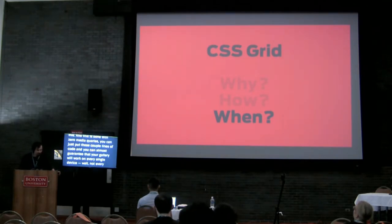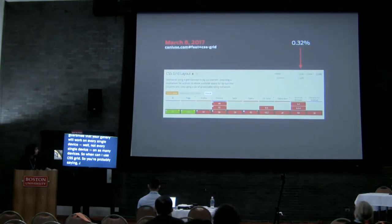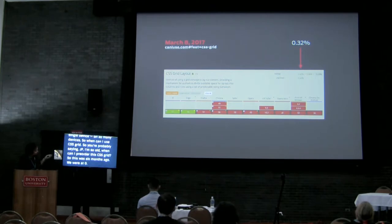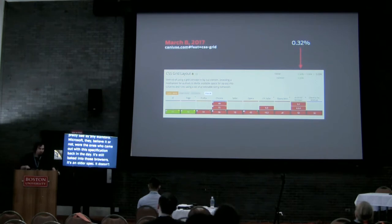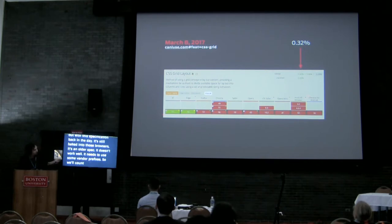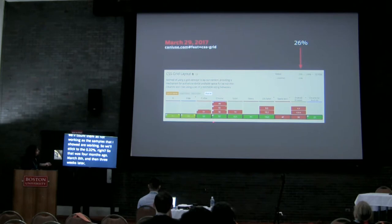When can we use CSS Grid? By now you're probably sold — when can you start? Four months ago we were at 0.32% support, pretty bad by any standard. Microsoft, believe it or not, was the one that came out with this specification originally — it's still baked into older browsers but needs vendor prefixes, so we won't count those. Sticking to 0.32% — that was March 8th. Then three weeks later, boom, it landed in Firefox, Chrome, Safari, Opera, iOS, and Chrome for Android.